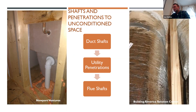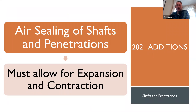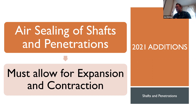Anywhere you've got a duct shaft penetration of any kind — for utilities, flues, pipes, or anything penetrating the thermal envelope — that has to be sealed. In addition in the 2021 IECC, that detail has to be sealed in a manner that allows for expansion and contraction. The code doesn't give much more detail than that, so it's a little vague. But the concept is that you can't use a sealing material that wouldn't allow for any expansion and contraction — if you've got pipes with hot and cold air going through, code says the sealing materials have to allow for expansion and contraction.